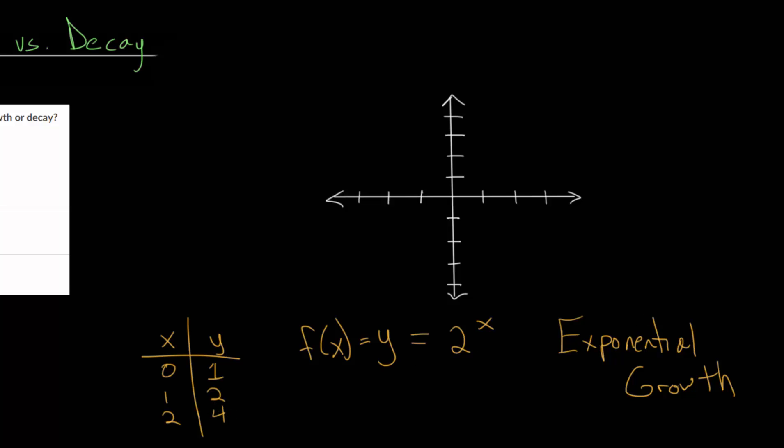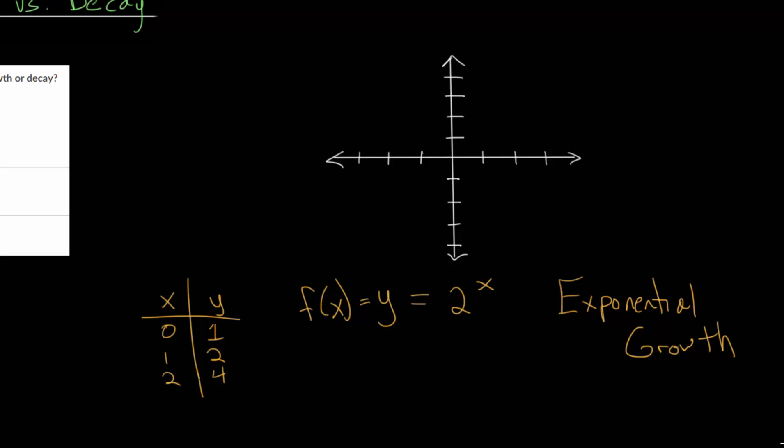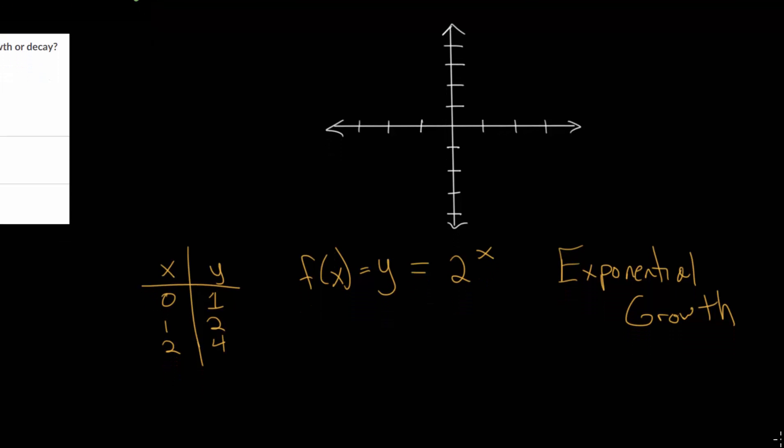But we can also look at fractional values or negative values. Let's put in negative 1. So that's 2 to the minus 1, meaning we are dividing by 2 one time, so that will be 1 half. If we plug in minus 2, that will be 2 to the minus 2, or divide by 2 twice, which is 1 fourth. With these points, we should be able to get a pretty clear pattern of what's going on.